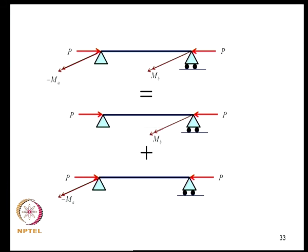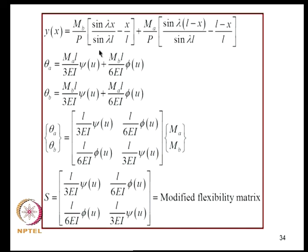For a system carrying two end moments MA and MB, we use the principle of superposition (solving separately for MA and MB) and combine. The slopes θ_A and θ_B are then related to MA and MB through a 2×2 matrix, giving a modified flexibility matrix. Inverting this yields the stiffness matrix, which takes into account the presence of axial loads. This stiffness matrix involves the stability functions Φ(U) and Ψ(U).